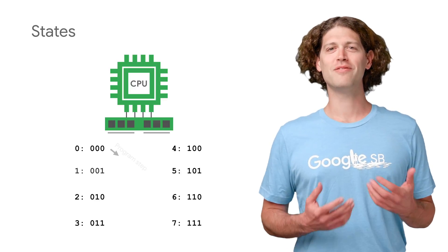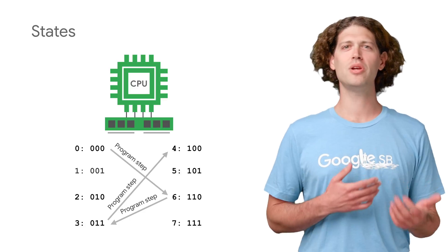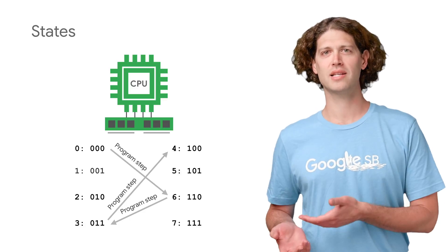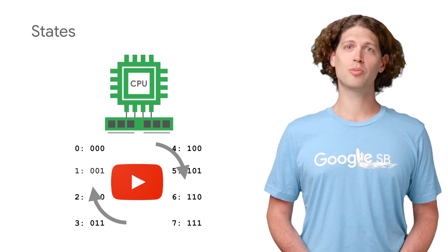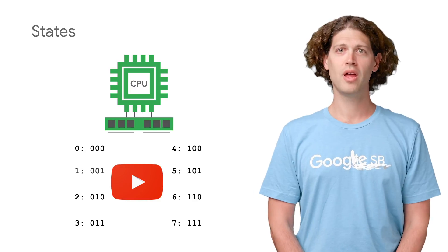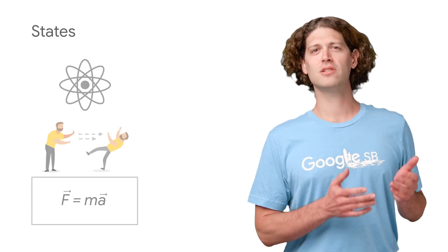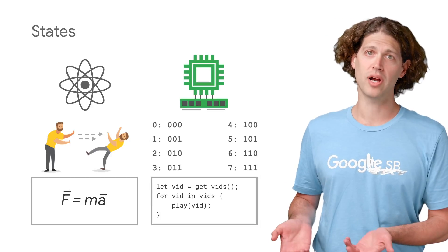A computer's state is the value of its memory bits, and computer programs determine how the computer goes from one state to the next. For example, when you hit the play button, YouTube's program started manipulating your computer's memory to show this video. Where physics has physical states and natural laws, computer science has memory states and programs.